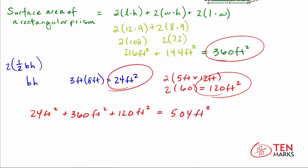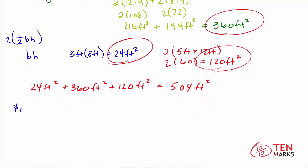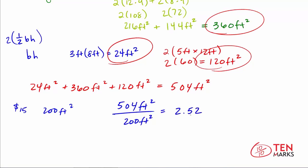Each can of paint covers 200 square feet, so we divide the total surface area by 200: 504 divided by 200 equals 2.52. Since she can't buy half a can, we round up to 3 cans of paint. Each can costs $15, so 3 times $15 equals $45. Rosina will spend $45 to paint the shed. In this lesson, you've learned how to find the surface area and volume of composite figures.